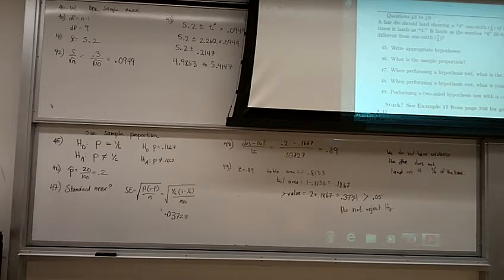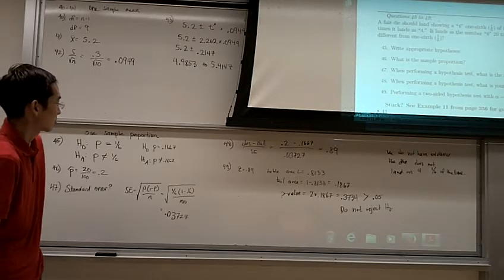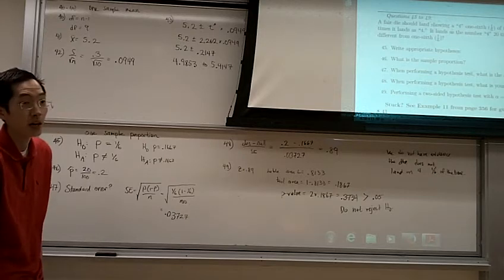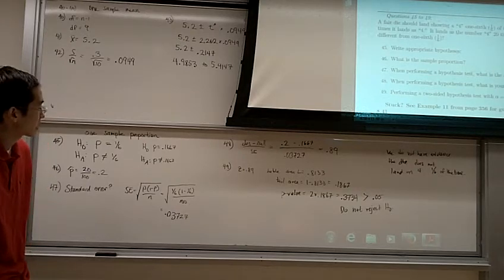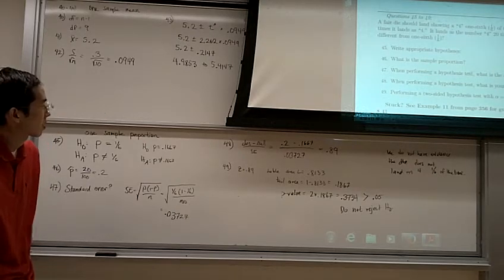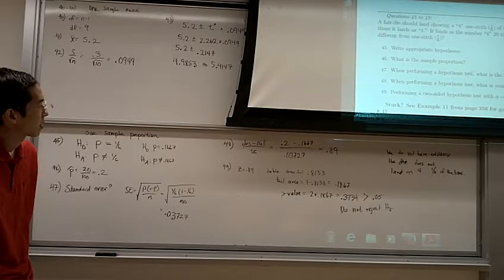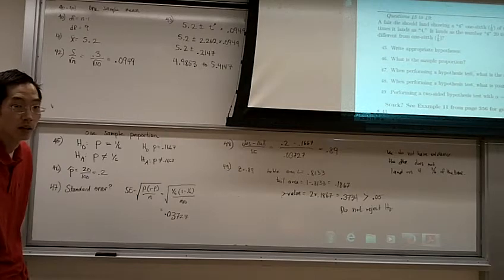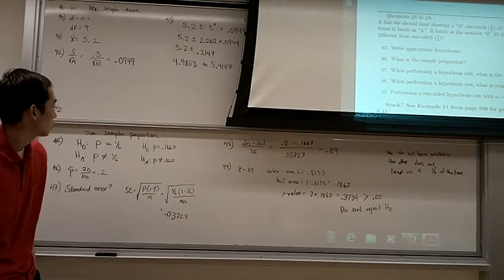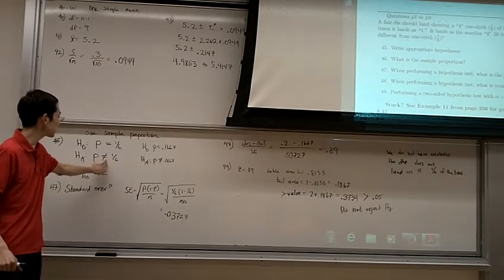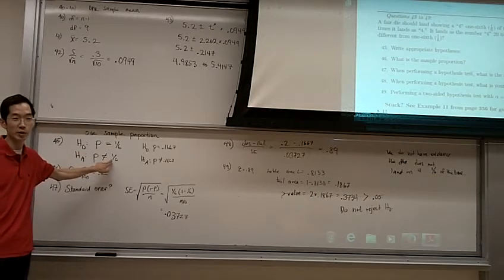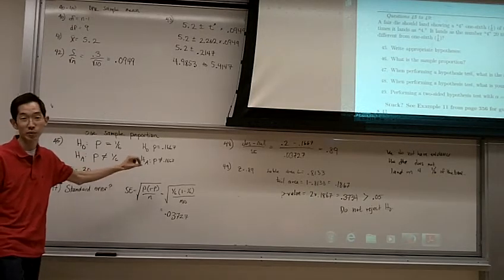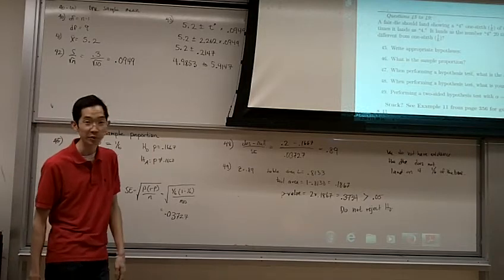Yes, I'll drop down 0.8133 by looking up the 0.89 in the table. Yes, that is correct. When do we know, how do we know when to double it? When we have a not equal sign in the alternative hypothesis, that means we have a two tail test. That's when we double our tail area to get our p-value.